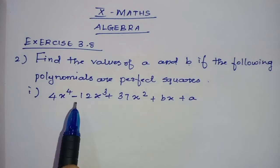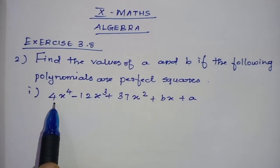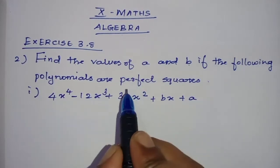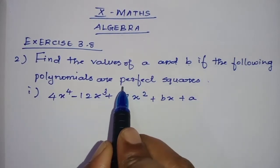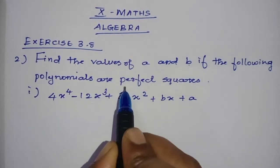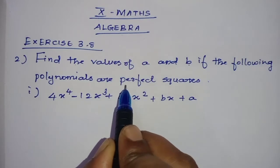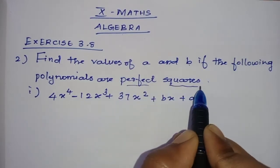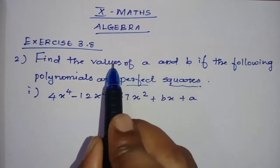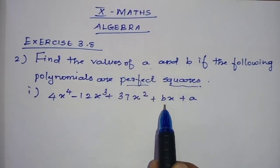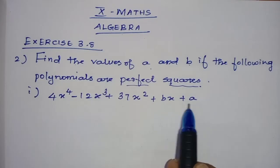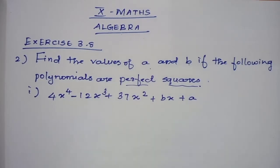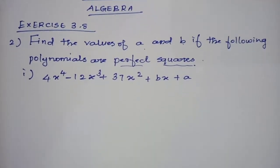There are two sums. I am going to teach the first sum. The given polynomials are perfect squares, so find the values of A and B. Since it is a perfect square, we will use the square root method to find the values.